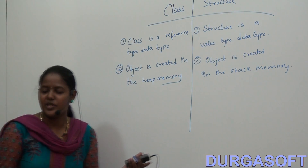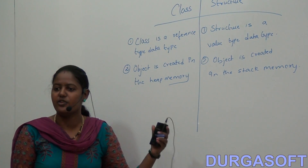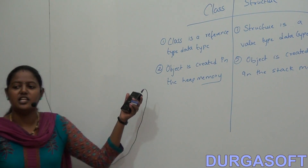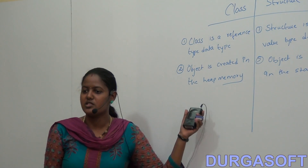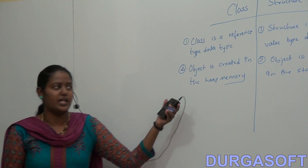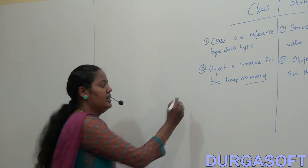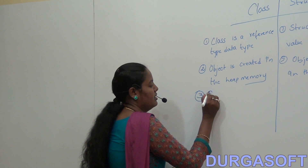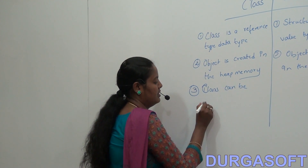Stack memory occupies very less space because in the stack memory the value is directly stored. Whereas in the heap memory, the memory will be occupied much more because the reference to the value is stored in the heap memory. In the stack memory, directly the value will be stored.